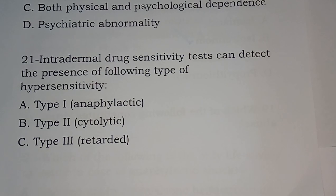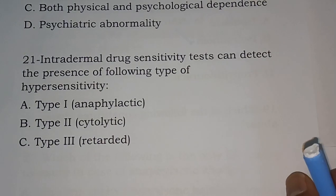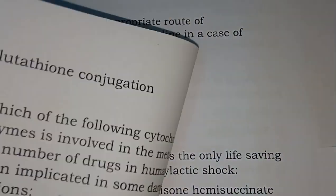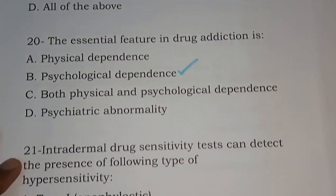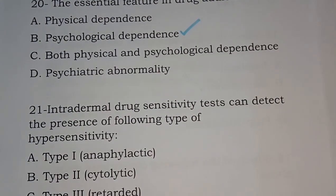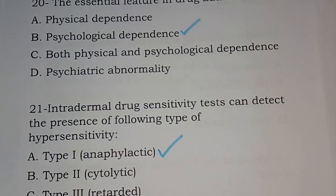Question 21: Intradermal drug sensitivity test can detect the presence of which type of hypersensitivity? Options: type 1 anaphylactic, type 2 cytolytic, type 3 retardant, and option D all of the above. The correct answer is option A, type 1 anaphylactic.